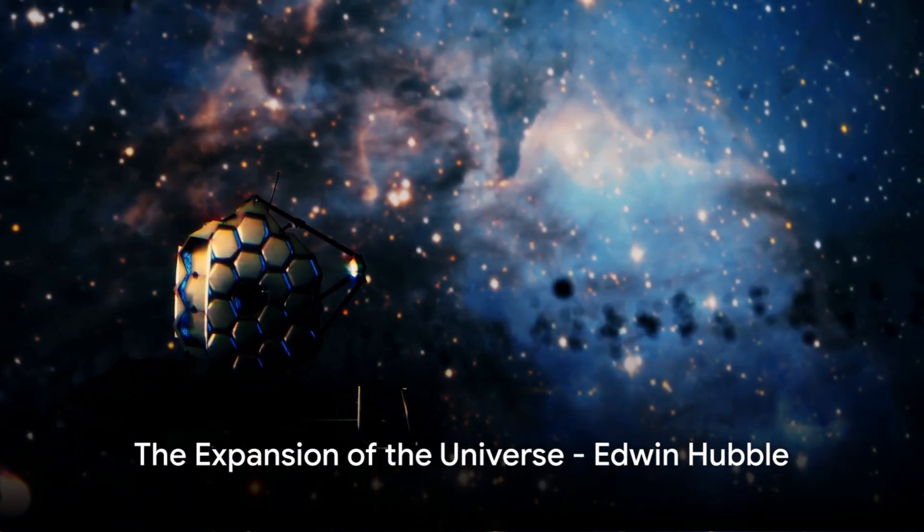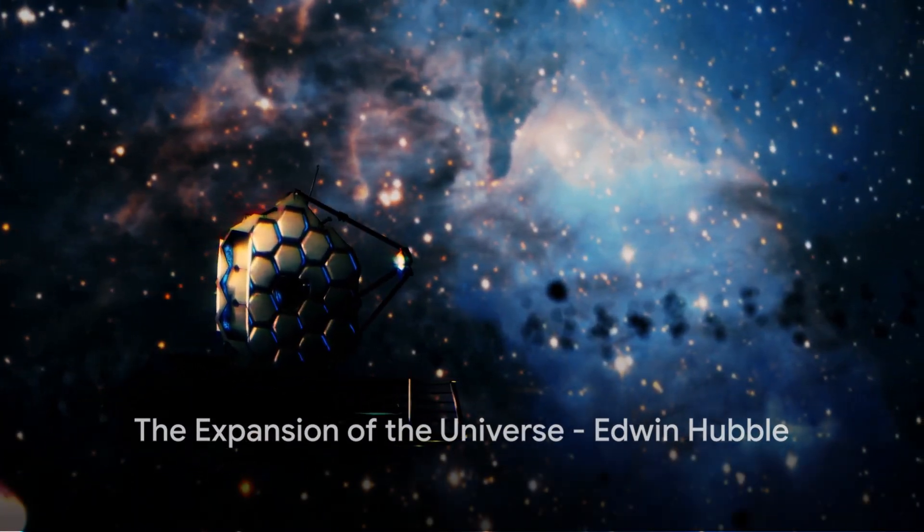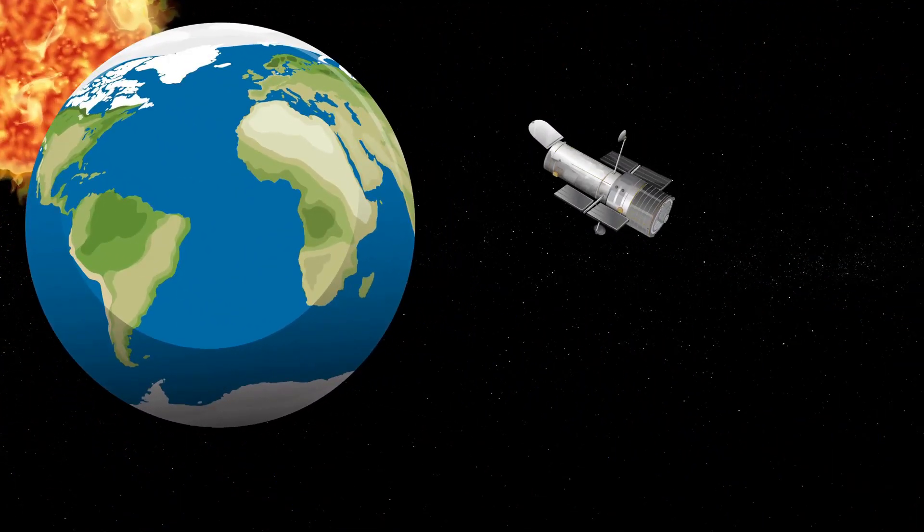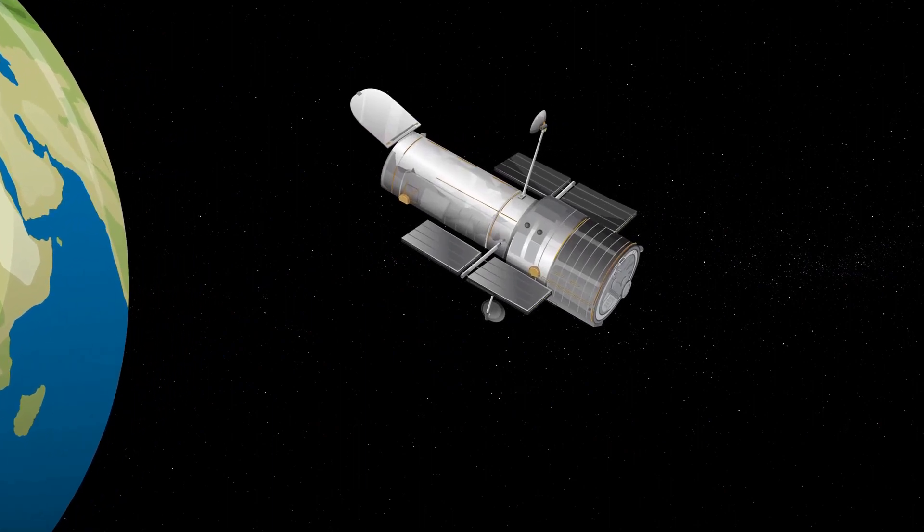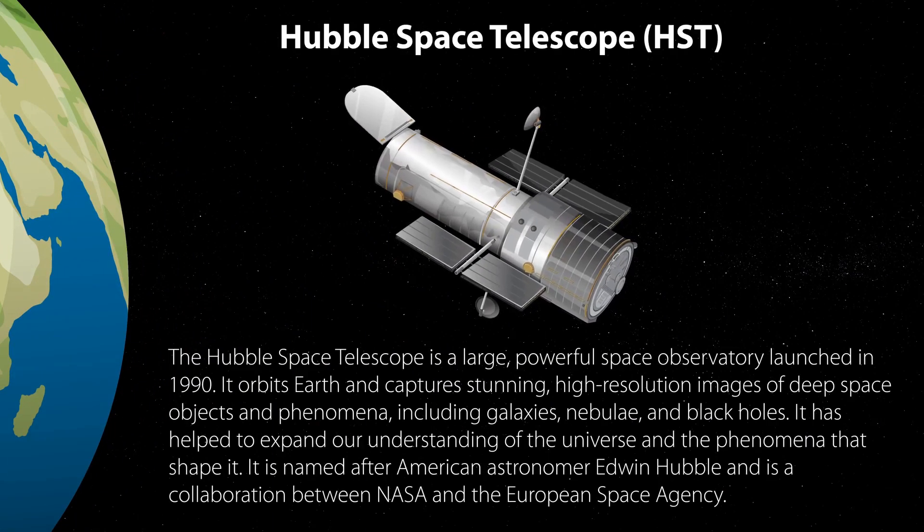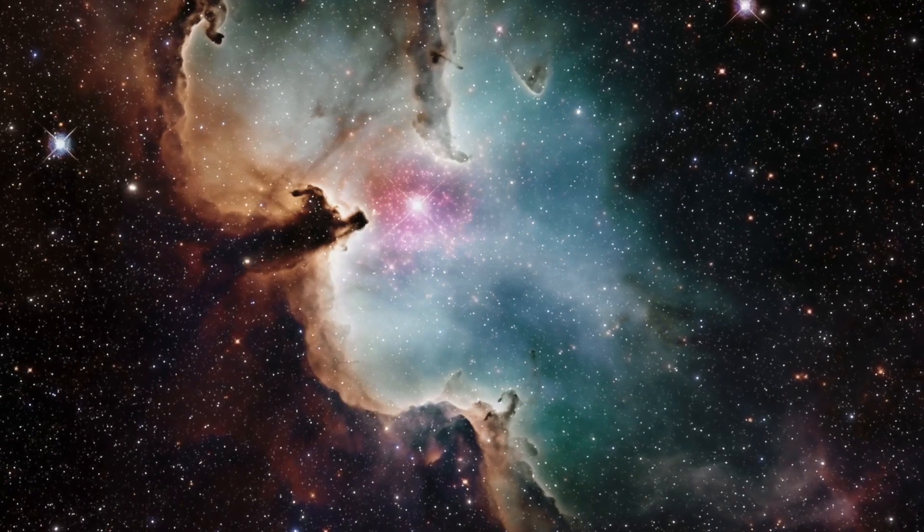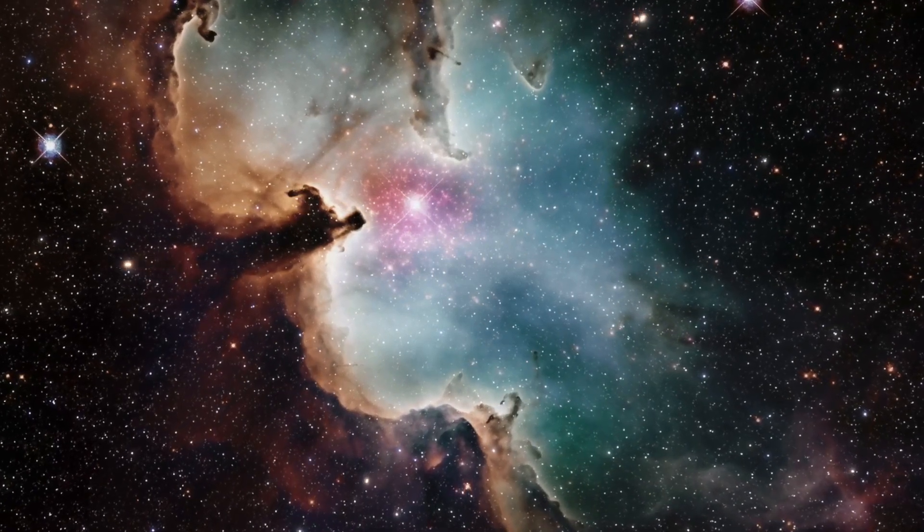Finally, we meet Edwin Hubble, who showed us that our universe is constantly expanding. Born in the late 19th century, Hubble's curiosity led him to an observation that would forever change our understanding of the cosmos. While examining distant galaxies, he noticed something peculiar: a redshift in the light they emitted. This redshift, he realized, was a result of these galaxies moving away from us, an indication of an expanding universe.